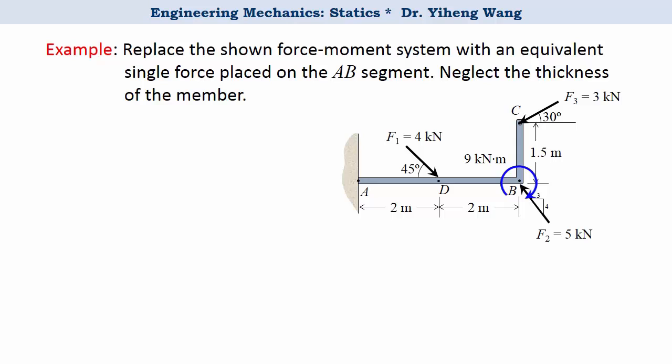Let's look at this example. This member is subjected to multiple force and moment, and we need to replace that by a single force that is equivalent to the original applied force moment system. To do that, let's first replace the applied force moment system with an equivalent system that has one force and one couple moment.